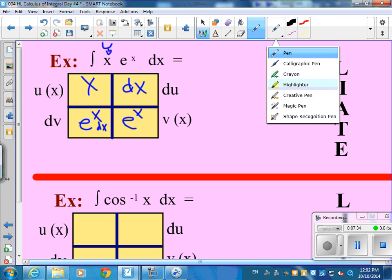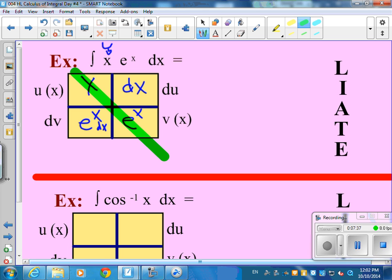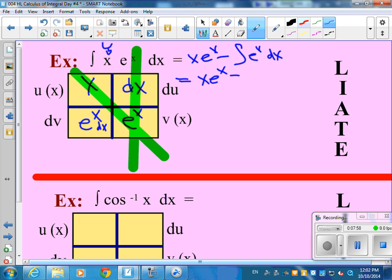Arrg. Crazy x marks the spot. And now we're ready to do it. x e to the x minus e to the x dx. Now, what is the antiderivative of e to the x? e to the x plus c. And you're done. You did it.